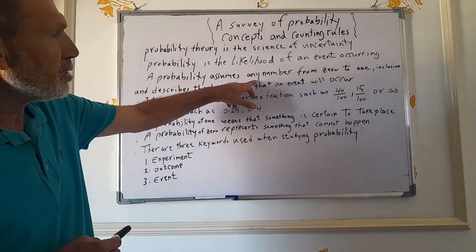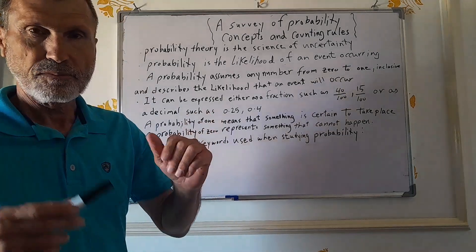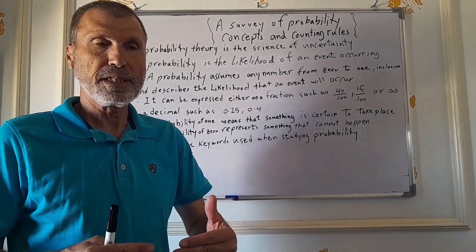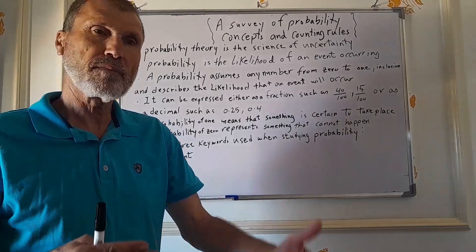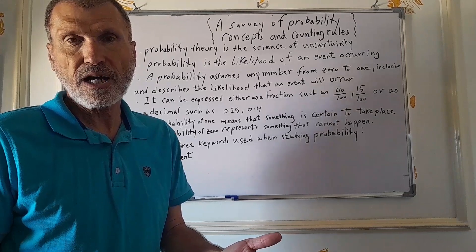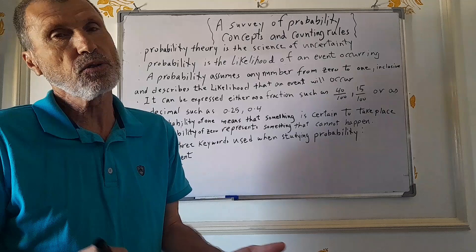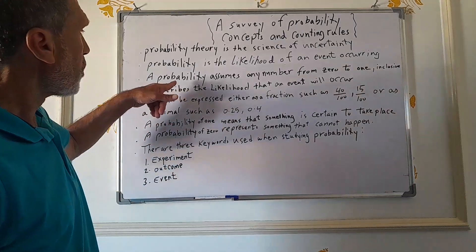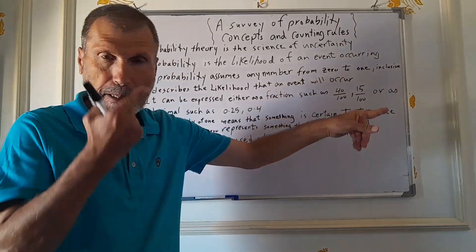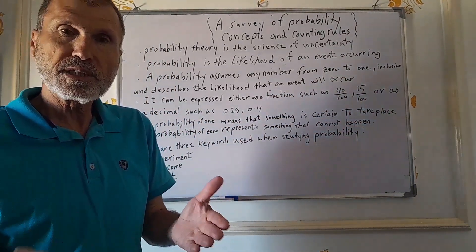Probability assumes any number from 0 to 1. When we compute the likelihood that something will take place in the future, we have to come up with a certain value. That value could be 0, or could be 1, or could be any number between 0 and 1. Probability assumes any number from 0 to 1, inclusive.